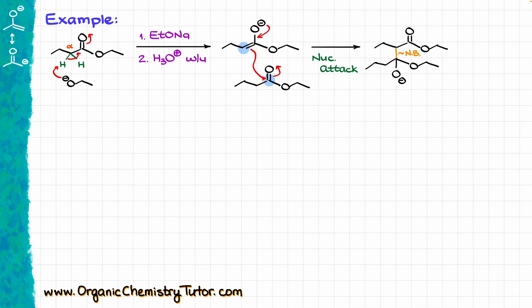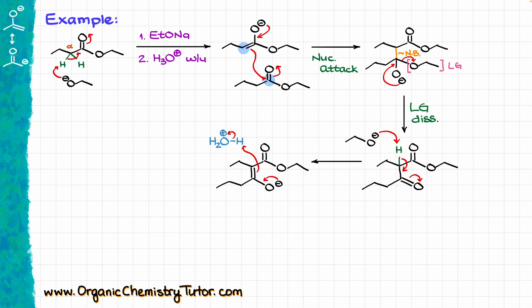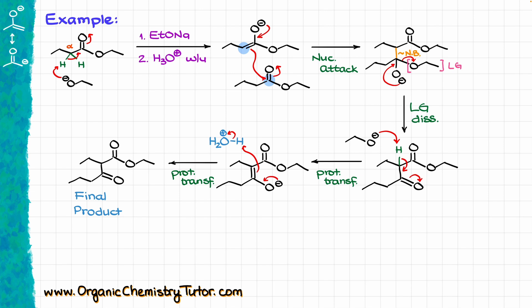Like in the previous case, my tetrahedral intermediate is going to lose the leaving group, which is again going to be my ethoxide. Electrons from the oxygen are going to kick the leaving group out and recreate my carbonyl. But we know we cannot take that as our final product, because we still have a proton right between my carbonyls, and that proton is comparatively acidic. So the ethoxide produced in this reaction is going to come in, snatch that proton, and reform the enolate right away. Then we do our acidic workup — I bring my acid, re-protonate my molecule, giving me my final product, the 1,3-dicarbonyl compound.